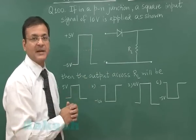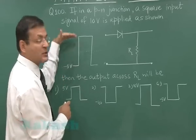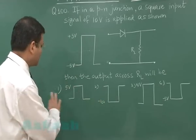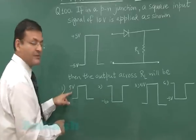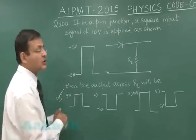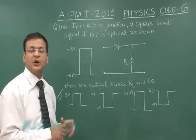It cannot pass in reverse biasing, so the output will only be the positive side from 0 to 5 volts. The most appropriate option is the first one. I'm marking option 1 for question 100.